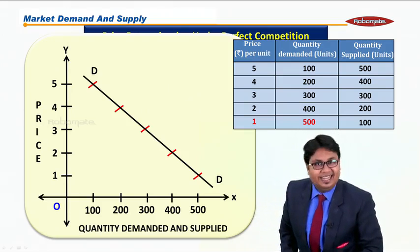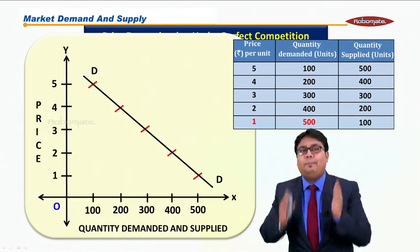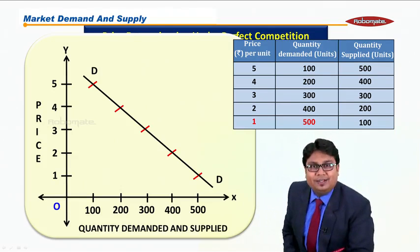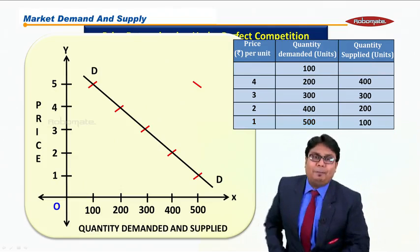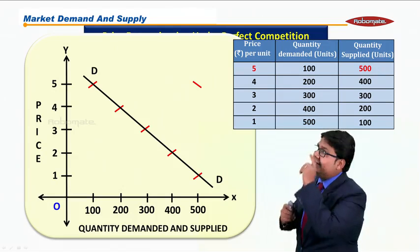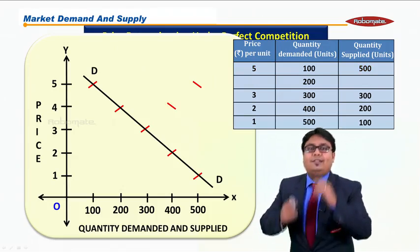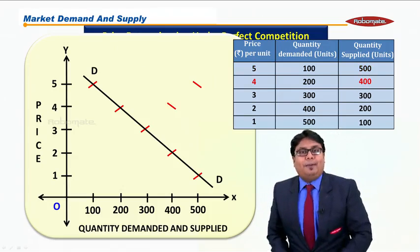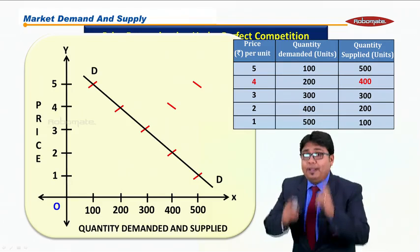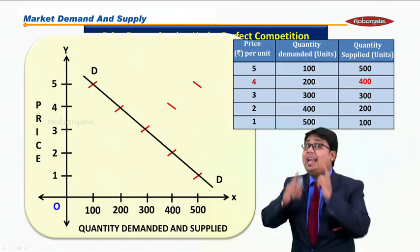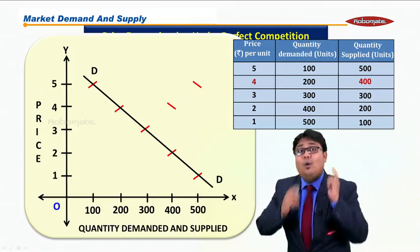Let us now plot the points for the supply curve. When price is rupees 5, my quantity supplied is 500. You can see that point, students. Further, when price is rupees 4, my supply is 400.